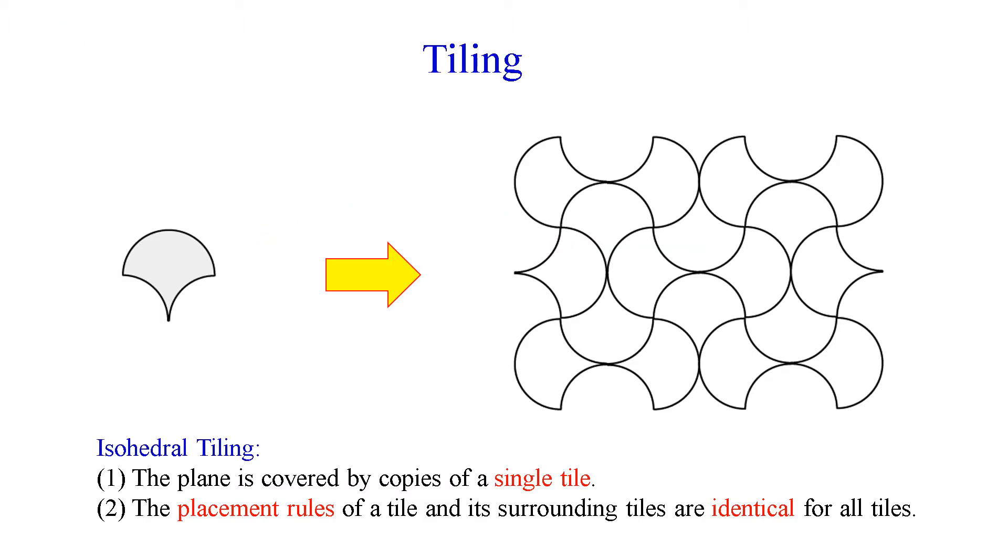Tiling is a 2D pattern covered by basic figures called tiles. In this example, a ginkgo leaf tile and its copies can cover the full plane and give a tiling pattern.